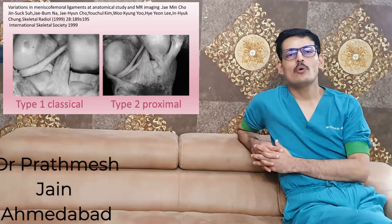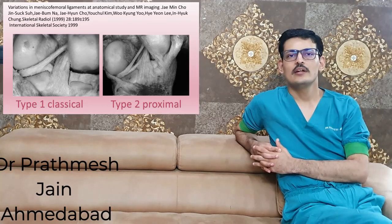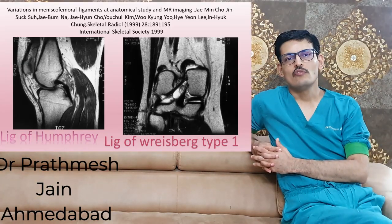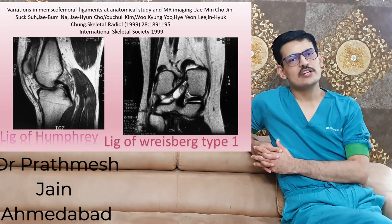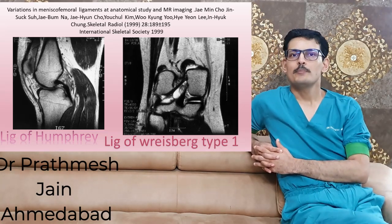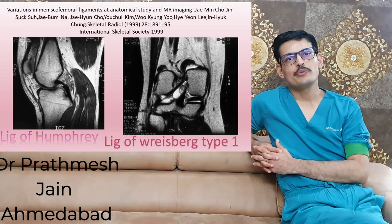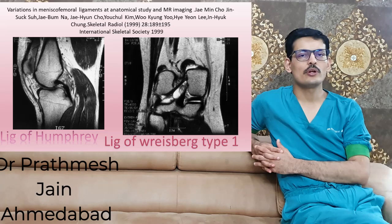Good morning friends. Today we will be talking about meniscofemoral ligaments. There are two meniscofemoral ligaments. The first is the ligament of Humphrey, which is present on the anterior aspect of the PCL, and the ligament of Wrisberg, which is present on the posterior aspect of the PCL. Both of these ligaments arise from the posterior part of the lateral meniscus and attach on the medial femoral condyle.